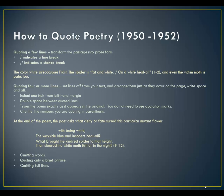Here's an example: 'The color white preoccupies Frost. The spider is [line 1] fat and white / on a white heal-all [lines 1-2].' The numbers indicate the line numbers of the poem. If you're quoting four or more lines, you want to set the lines off from your text and arrange them just as they occur on the page — white space and all. Indent one inch from the left-hand margin, double space between quoted lines, type the poem exactly as it appears in the original. You do not need to use quotation marks, and you're going to cite the line numbers you're quoting in parentheses after the quotation.